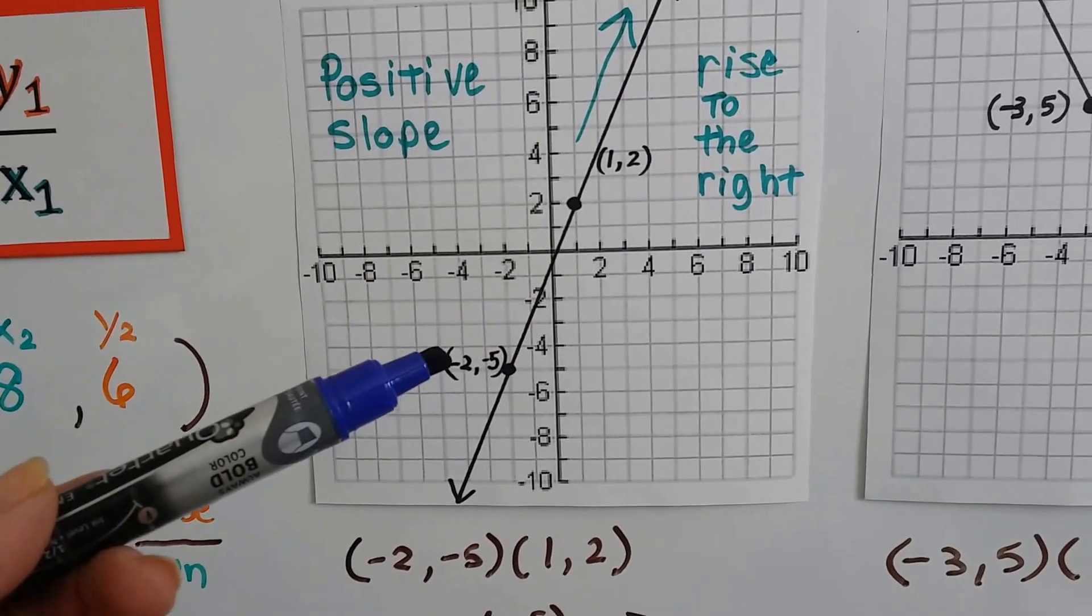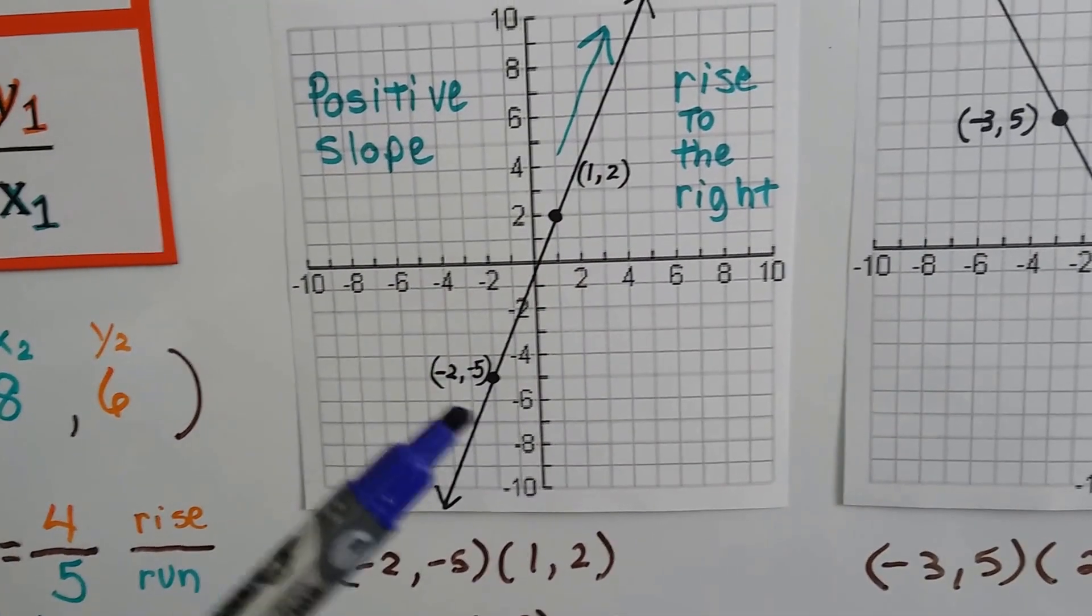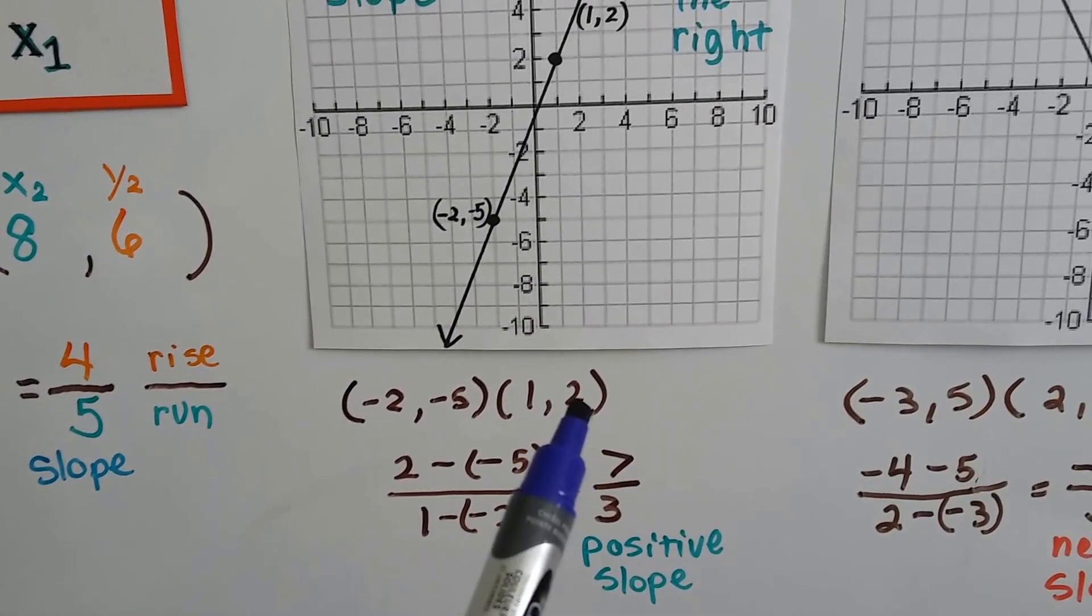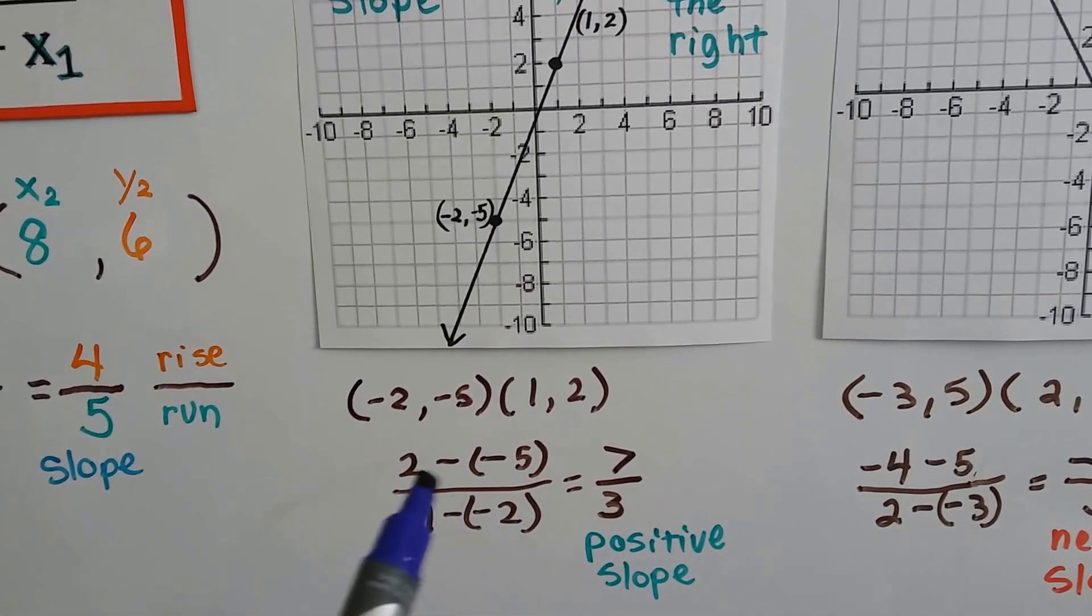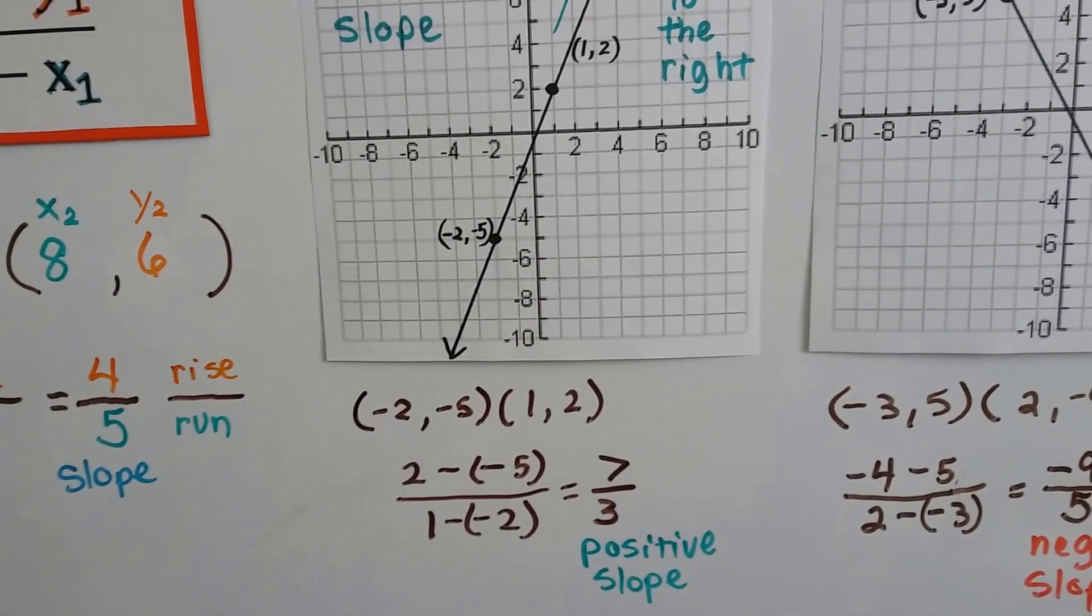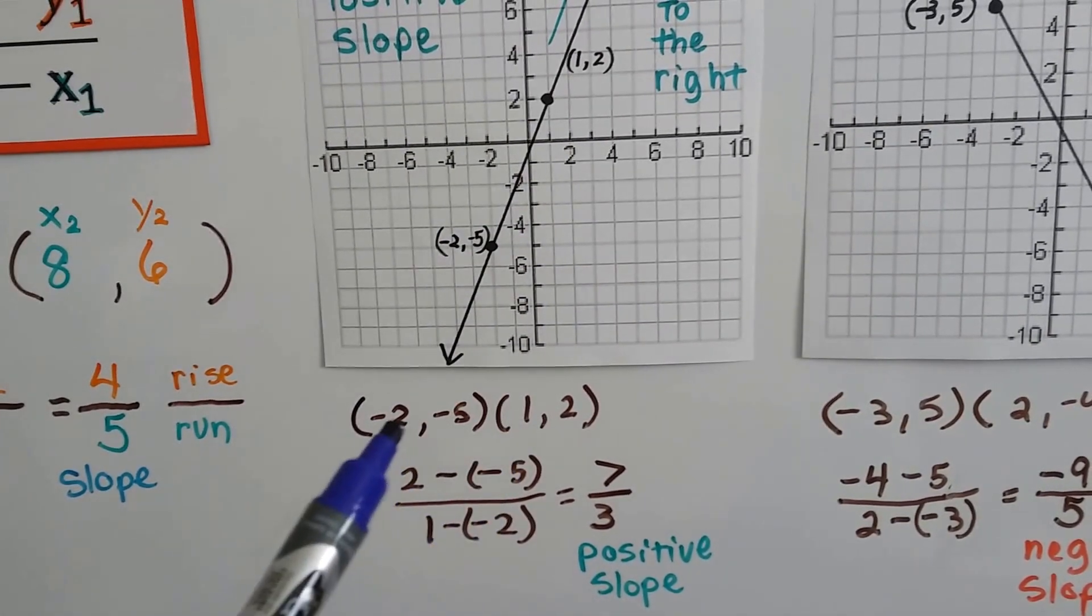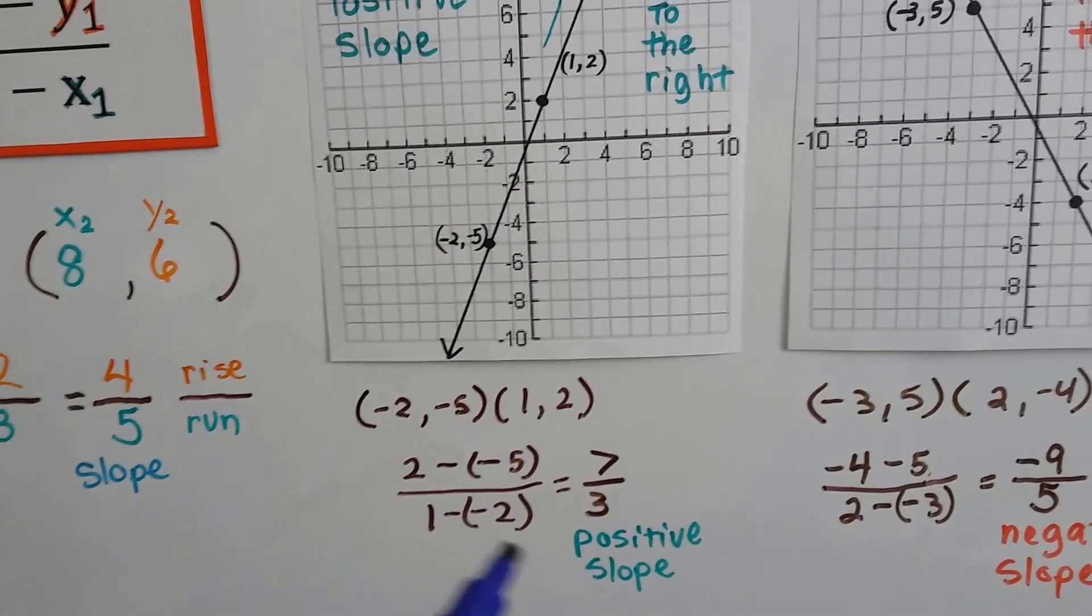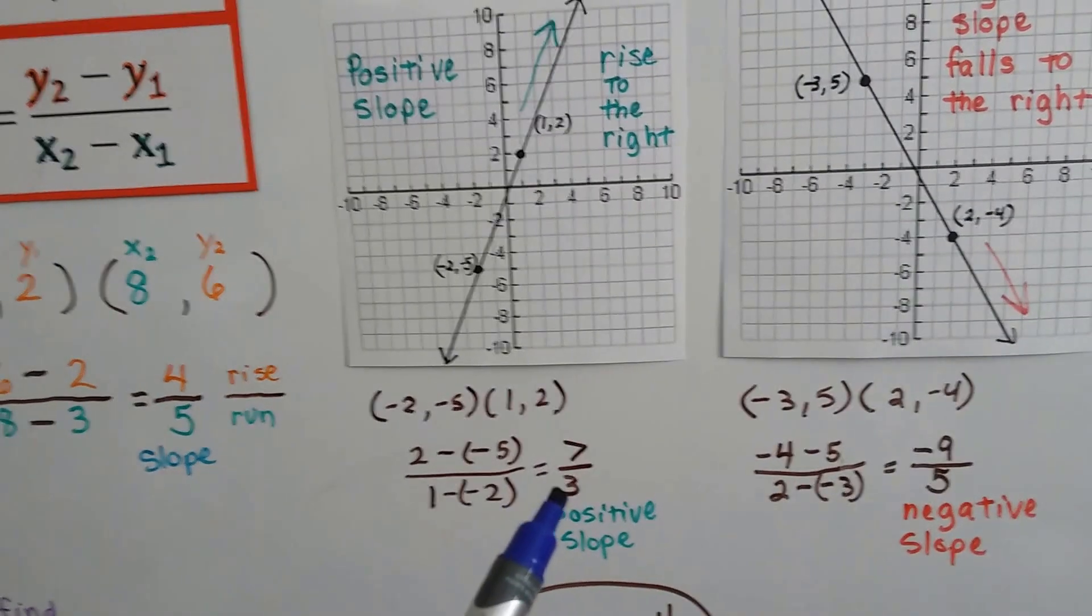And our coordinates are negative 2, negative 5, and 1 comma 2 as we choose from left to right. When we do our math, we want to have y2, which is the 2, take away y1, which is negative 5. And remember, when you subtract a negative, you add the opposite. So it's going to be a positive 7. And then we've got x2 is a 1, and x1 is a negative 2. So we have 1 take away a negative 2. We're going to add the opposite and get a 3. Look, it is a positive slope. It's a positive 7 over 3.